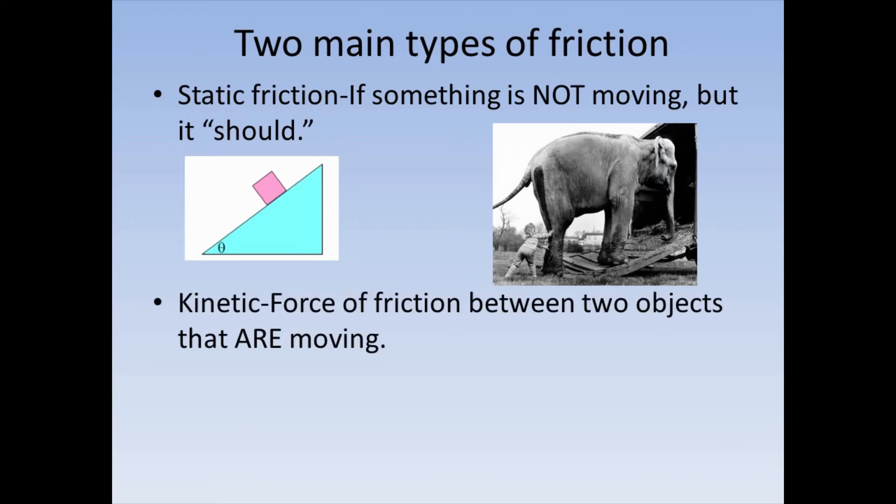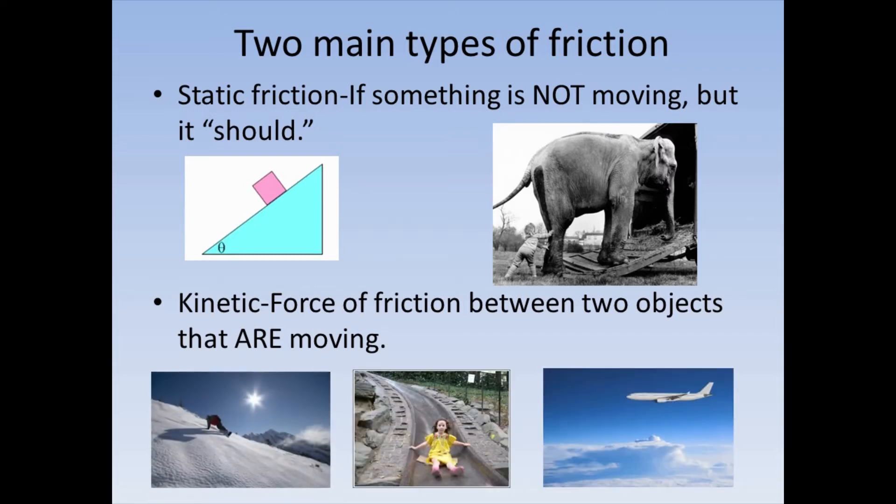The other type of friction that we're going to talk about is kinetic friction, which is a force of friction between two objects that are moving. So this would be like a snowboarder going down the hill, where the two objects are the snowboarder and the snow. And a little girl that's going down a slide. An airplane that's flying through the air, where the airplane is the one object and the air pushing against it is the other object. So we're really just going to talk about two different types. Static friction, something that's not moving, and kinetic friction, things that are moving.